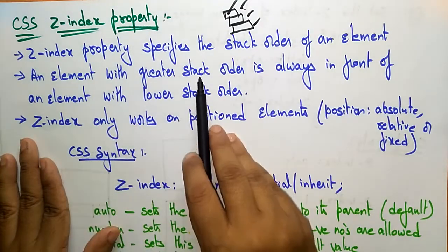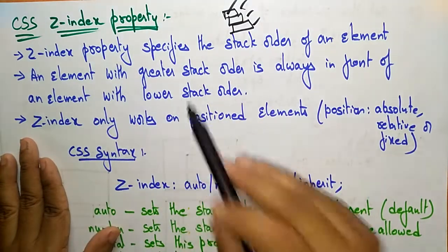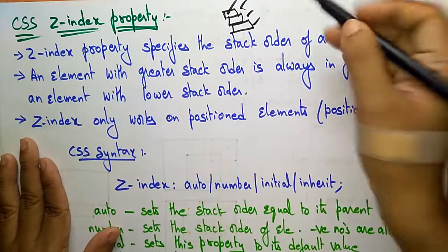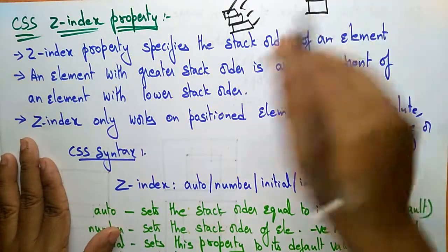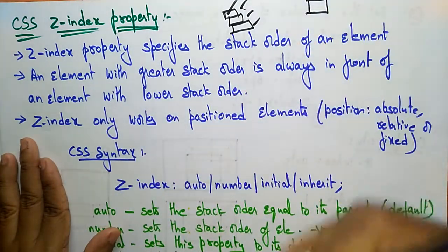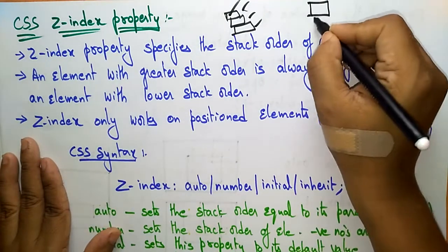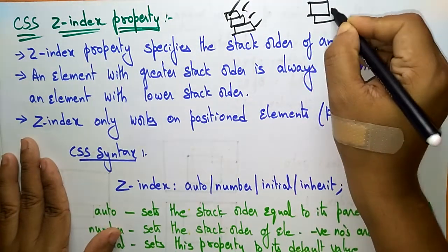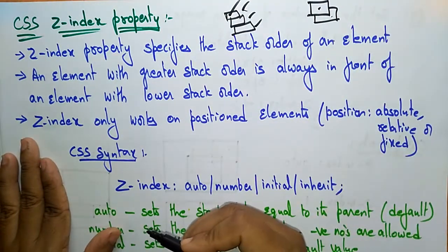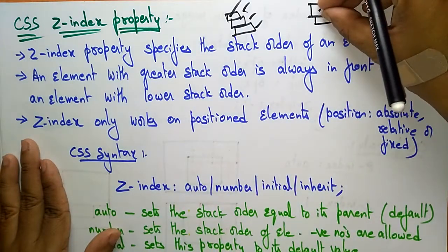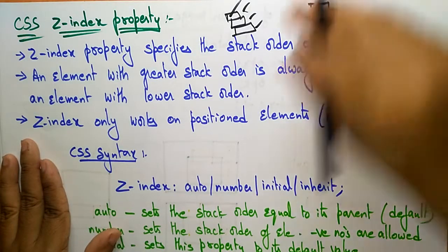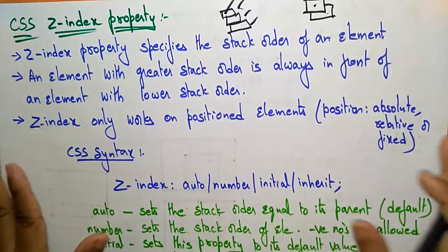An element with a greater stack order is always in front of an element with a lower stack order. So the element which has the greater stack order is always placed in front — the greater is placed above the lower. That is the stack property.